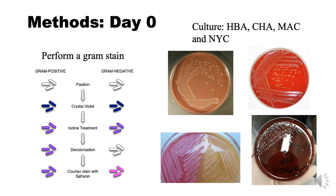Within one to two hours on day zero, gram stains are performed directly on the blood specimen. This is a quick and cost-effective primary test which divides bacteria into either gram-positive or gram-negative. The stains differ between gram-positive and negative bacteria due to the thickness of the peptidoglycan cell walls. Horse blood, chocolate, and MacConkey agar plates are inoculated using aseptic technique and incubated for at least 18 to 24 hours at 37 degrees under carbon dioxide-enriched conditions. The New York agar is also set up to isolate and identify pathogenic Neisseria, incubated under the same conditions and time.